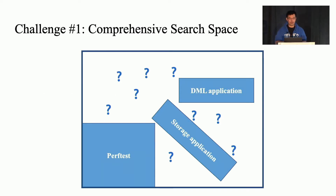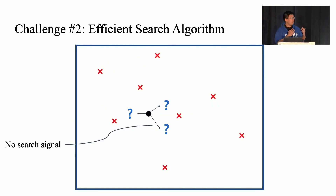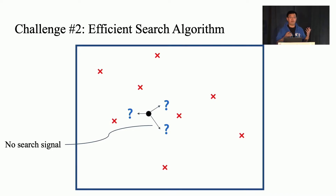Given the anomaly definition, we have several challenges to address. The first is how we can test or represent workloads that are outside existing application workload regions. The second challenge is that even when we build a search space, it is inherently very large given the complexity of RDMA subsystems and the variety of applications. So, how can we test efficiently? For example, if we are already testing some points in the search space, how can we know which direction or what next point to pick? This is challenging because we have no search signal to use.